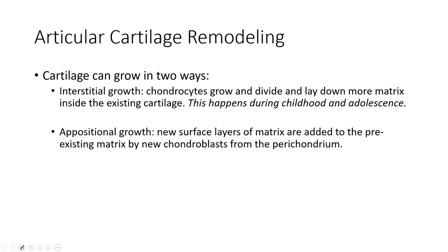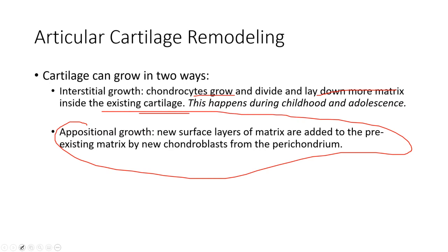Cartilage can grow in two ways, similar to bone. Appositional growth is where new layers are added to preexisting layers by new chondroblasts, which form into chondrocytes. Interstitial growth is where chondrocytes grow and divide and lay down more matrix inside the existing cartilage — this primarily happens during childhood and adolescence. Typically what we see long-term is appositional growth, which increases the thickness rather than the length of cartilage.